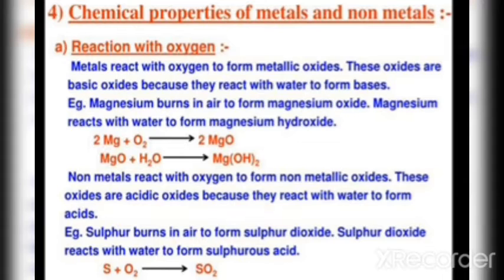For example, magnesium when burned in air forms magnesium oxide. Magnesium oxide reacts with water to form magnesium hydroxide. The reaction is: 2Mg + O₂ → MgO (magnesium oxide), and MgO + H₂O → Mg(OH)₂ (magnesium hydroxide). So metals reacting with oxygen gives a metal oxide, and metals reacting with water gives a metal hydroxide.